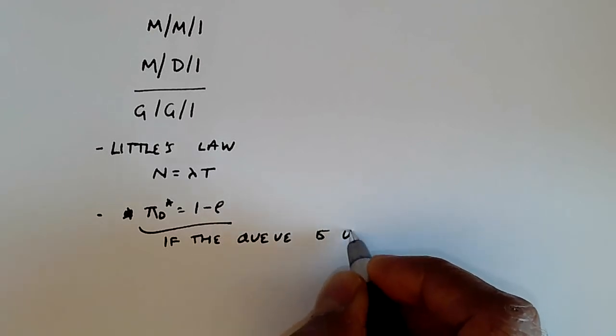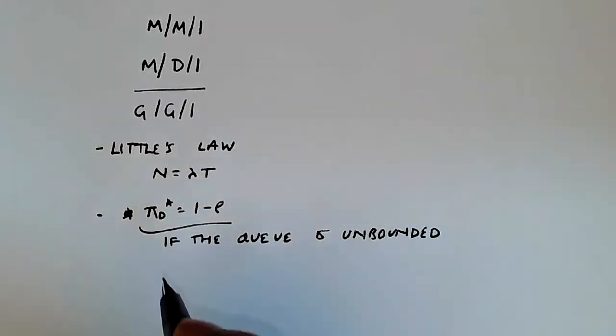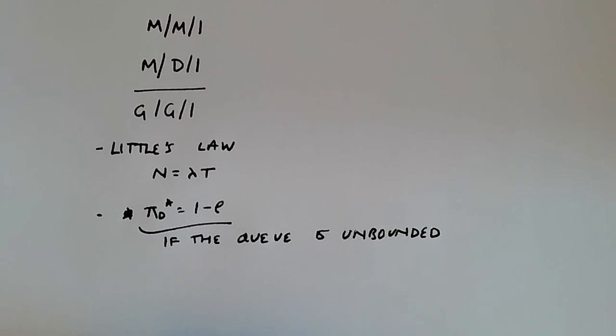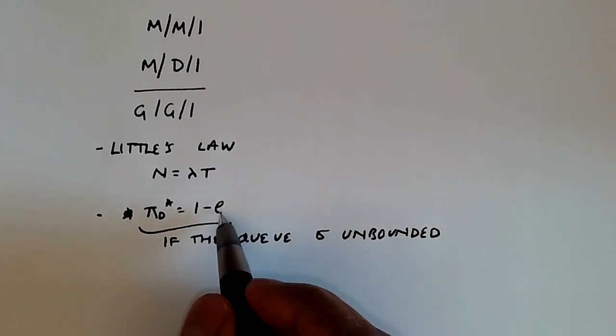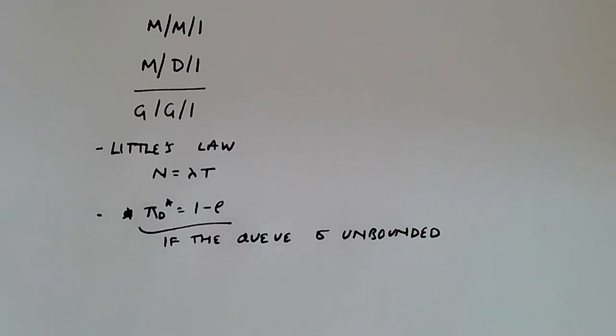So if it's bounded, then it doesn't hold true. But for unbounded queues, this relationship holds true. But it's not particularly exciting. It just says that if your utilization is, let's say, 90%, then 10% of the time you're idle. And that's not a whole lot you can say beyond that.